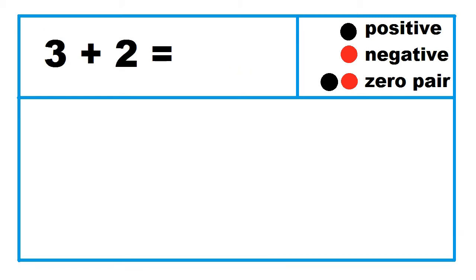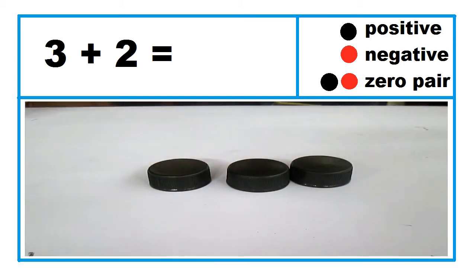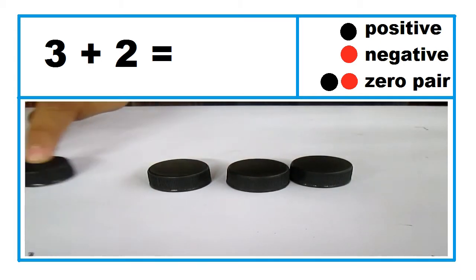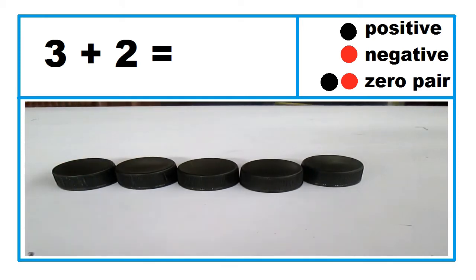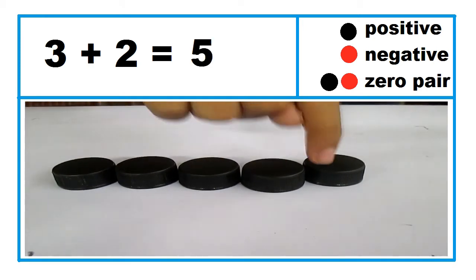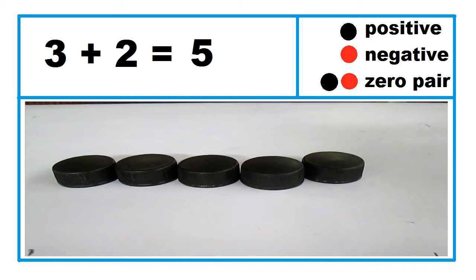Example: 3 plus 2. Three black caps plus 2 black caps equals 5 black caps. So, 3 plus 2 equals 5.